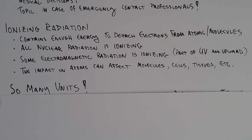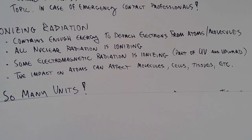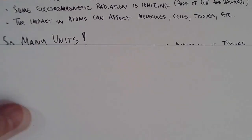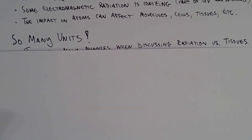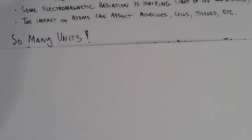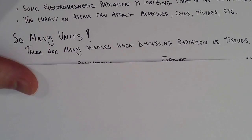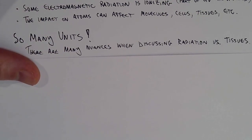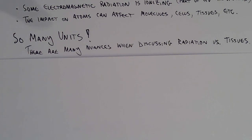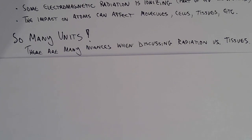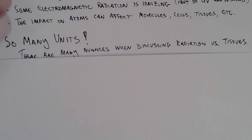Now, the units. This is probably one of the places where it gets confusing because there are so many different types of units when dealing with radiation. Part of that is because there are lots of nuances when talking about the impact of radiation on tissues. Some of these units have made their way into pop culture.